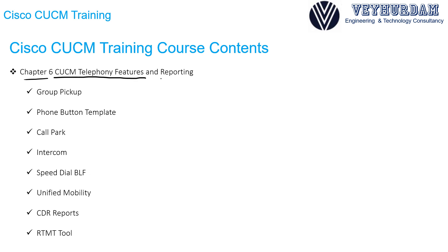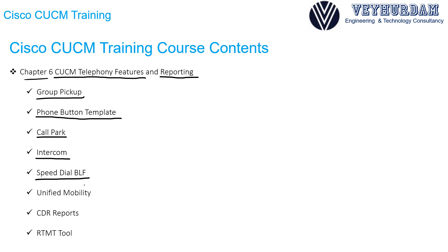Chapter 6 will cover CUCM telephone features and reporting. First, you will understand call pickup groups, then define phone button templates, complete a group pickup lab, and learn call park and intercom features. We will also configure speed dial, BLF (Busy Lamp Field), and enable and schedule mobility on our CUCM.